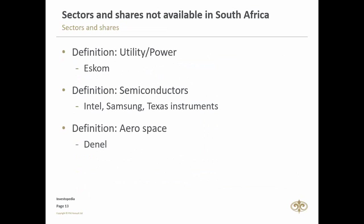The utility sector is a category of stocks for utilities such as gas and power, containing companies such as electric, gas, and water firms and integrated providers. Because utilities require significant infrastructure, these firms often carry large amounts of debt, making them sensitive to changes in interest rates. In South Africa, our utility company is Eskom — which is not listed. So for a South African to invest in utilities, the only way is to look offshore. The utility sector also serves as a hedge in low interest rate environments.